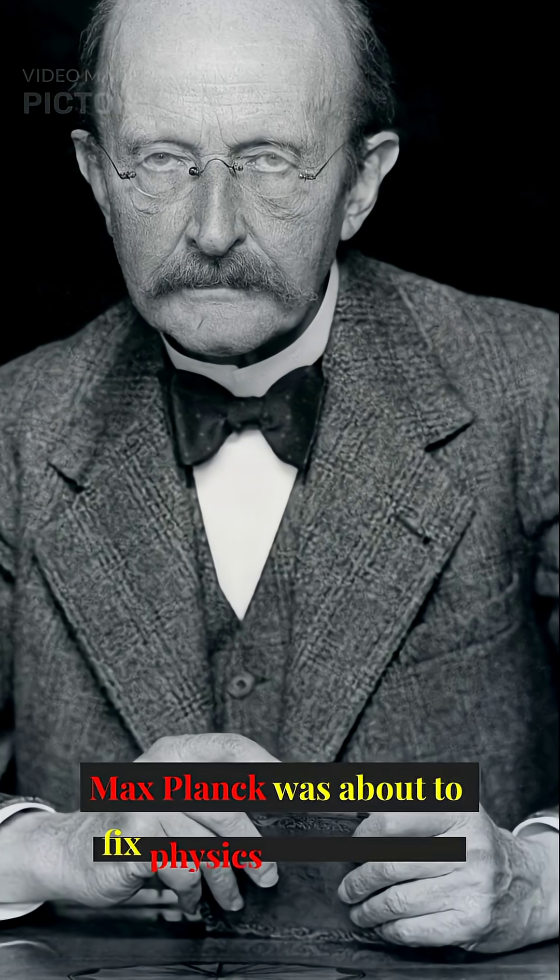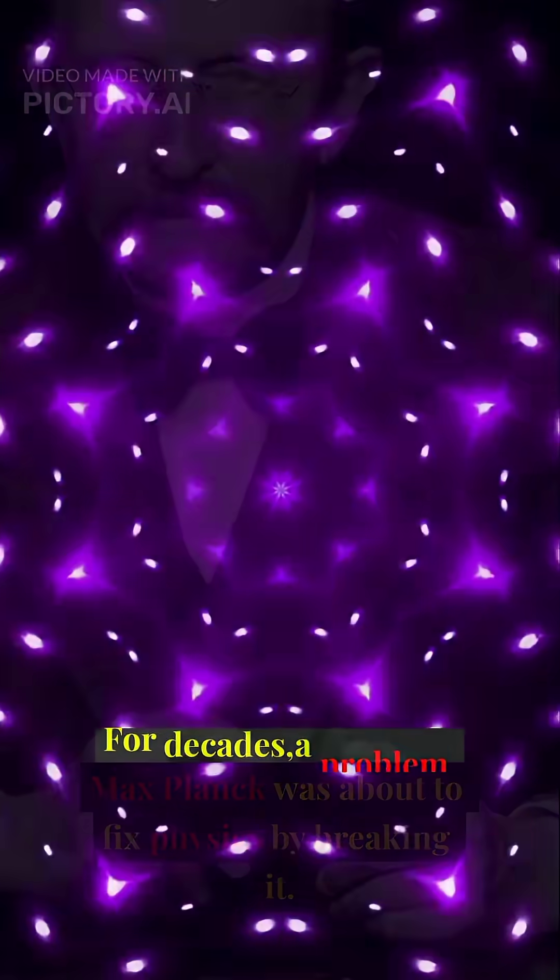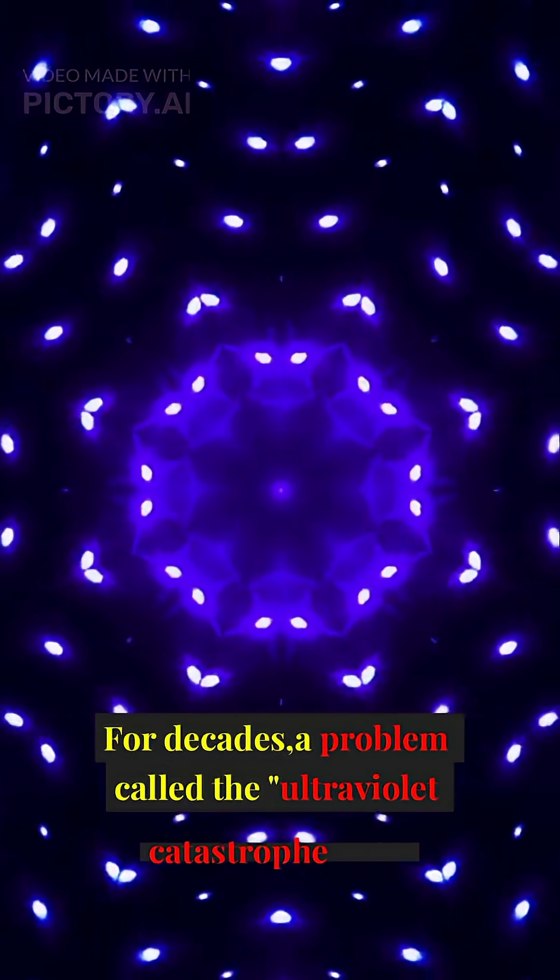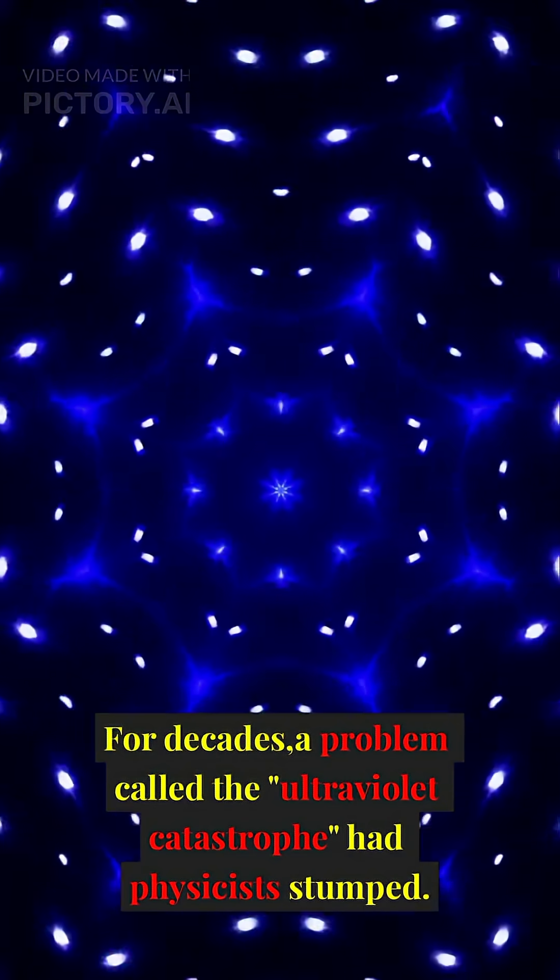Max Planck was about to fix physics by breaking it. For decades, a problem called the ultraviolet catastrophe had physicists stumped.